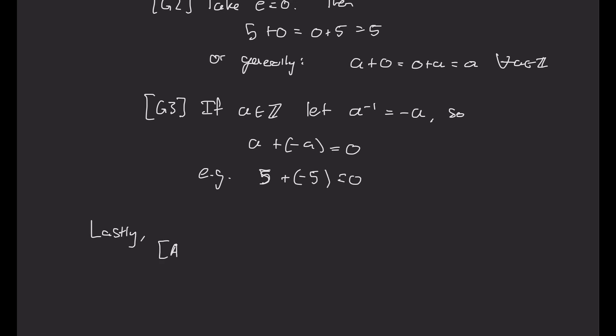Lastly, to show that it's abelian, we know that if I add 5 plus 7, that's the same thing as 7 plus 5, and that works for any two integers. So a plus b is b plus a. So in fact, we've checked all of the properties of a group, an abelian group. So Z with addition is an abelian group.